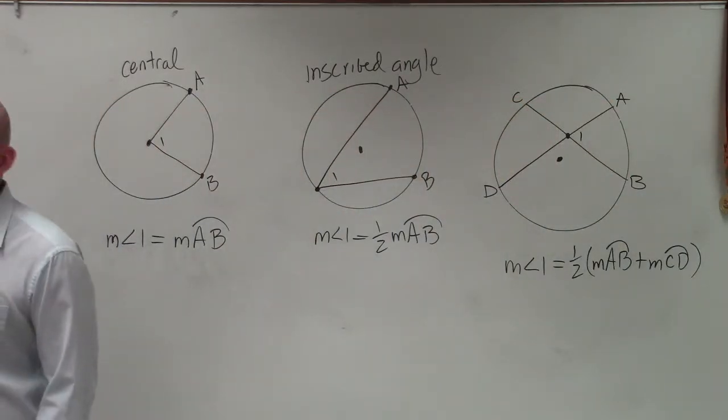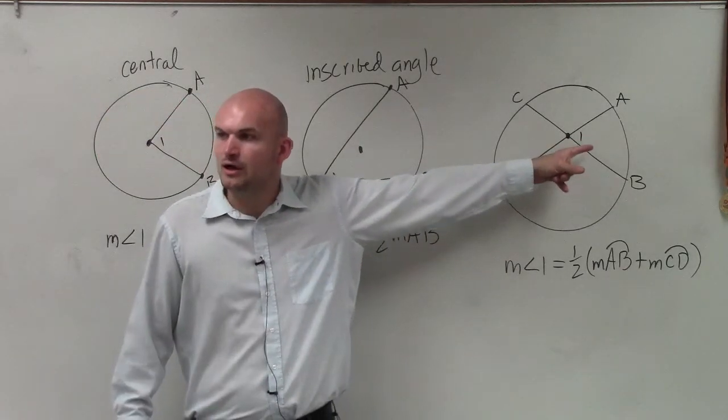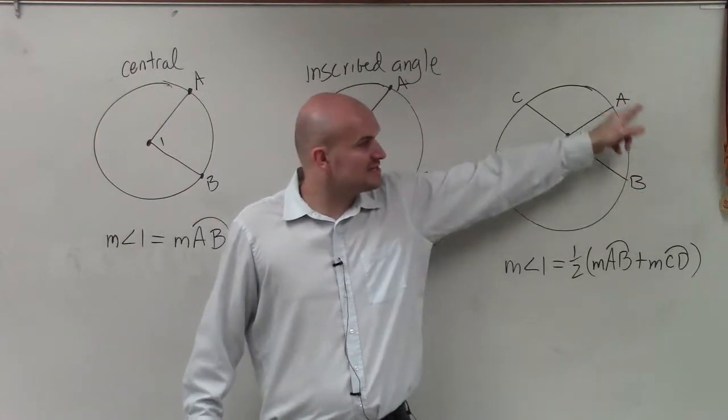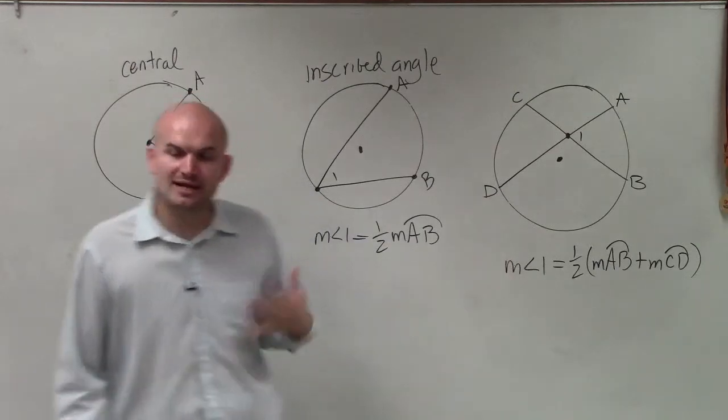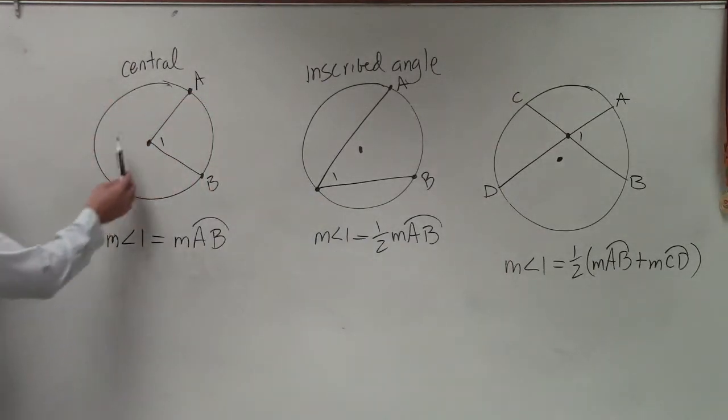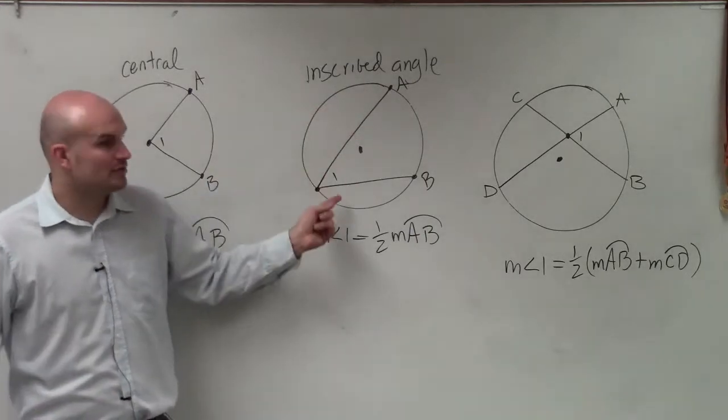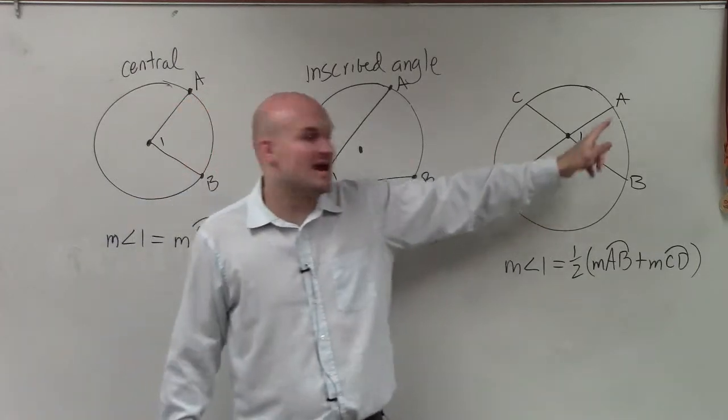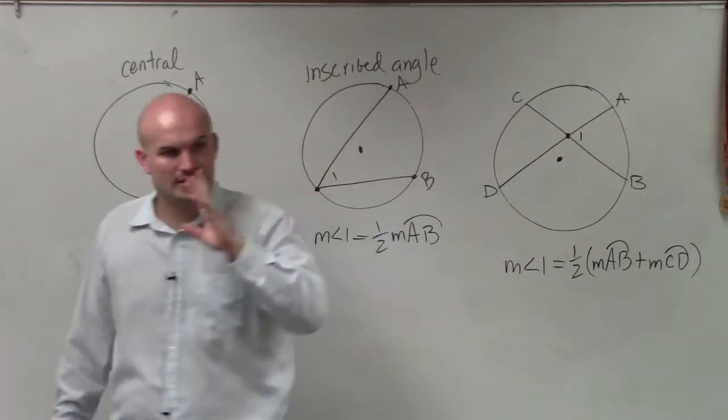I won't be concerned about that right now. I would just be concerned about if I'm trying to find angle 1, what I need to now do is take 1 half of the sum of A B as well as the opposite arc. So again, to reiterate, central angle, you find the arc of the central angle. For inscribed angle, it's 1 half of your arc. And for the third angle, it's going to be 1 half the sum of its arc and of its opposite arc.